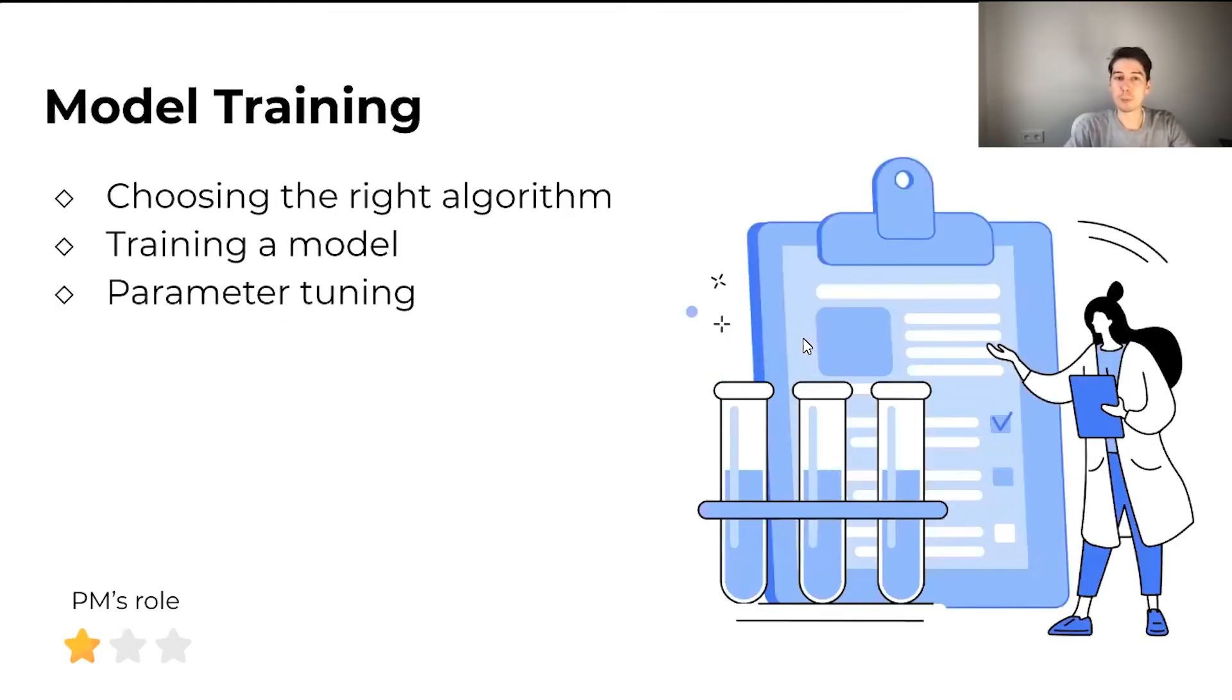Now let's move to the model training, probably the most interesting part. Here, we need to think about what would be the right algorithm, how to train a model, and tune parameters. Usually people expect that this would be a product manager's decision on which algorithm to choose or how to train a model. However, this is not true, and this would probably be the step that you're going to be the least involved in. You can think about it the same way as if you are launching a new UI feature. Probably, you wouldn't tell your engineers which programming language or technologies they should use. Here, it's the same. It would be a data scientist or a machine learning engineer who would make this decision.